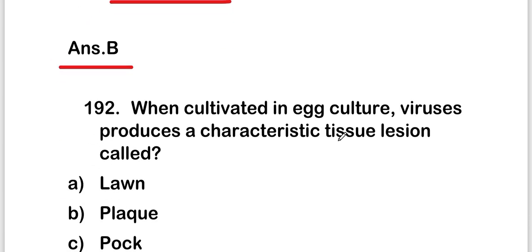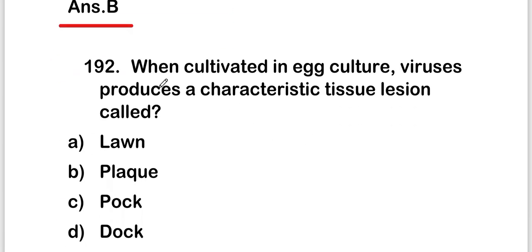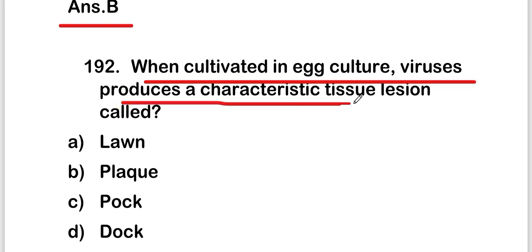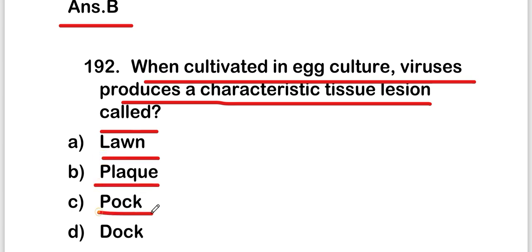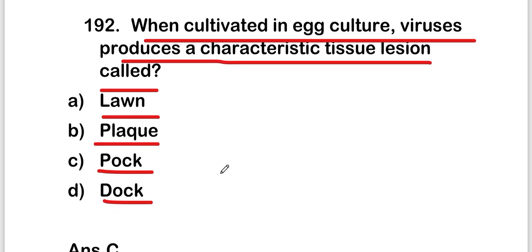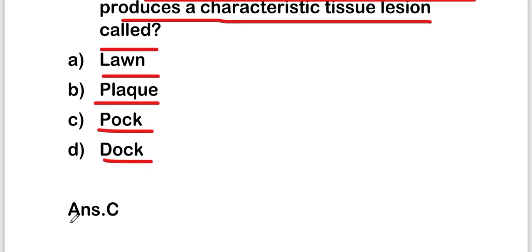The next question: when cultivated in egg culture, viruses produce a characteristic tissue lesion called — lawn, plaque, pock, or dock. The right answer is option C — pock.